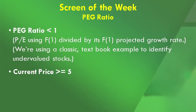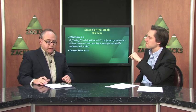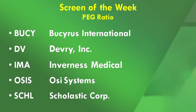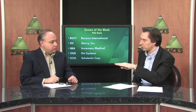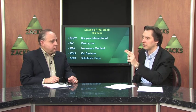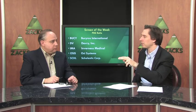This is also applied only to companies trading at least $5 a share. This screen generated about 40 to 45 stocks. Here's a diverse set of companies that came through: Bucyrus International, DeVry Incorporated, Inverness Medical, OSI Systems, and Scholastic. Each of these companies has pretty spectacular projected growth rates, but their PE ratio is trading below their growth rate — which is what makes these companies very good bargains to put on your radar screen.